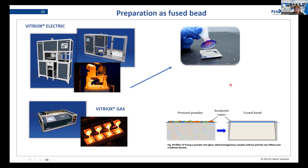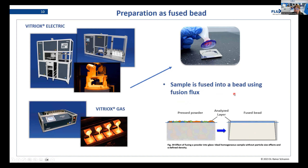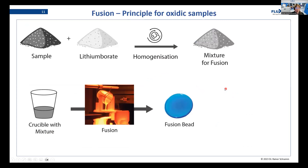Another advantage of preparing as a fused bead is that you don't have any particle size effects. This is because the fused bead is completely homogenized and your analyzed layer will always be a perfect representation of your whole sample. In general, the sample is fused into a bead using fusion flux.